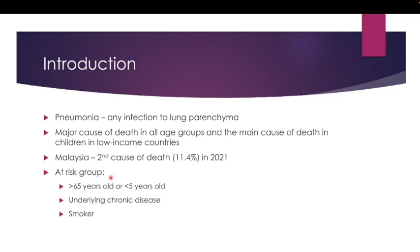The at-risk groups for pneumonia are usually those aged more than 65 years old and those aged less than 5 years old, those with underlying chronic diseases including pre-existing lung conditions such as chronic bronchitis and asthma, as well as any diseases that cause immunosuppression — for example, uncontrolled diabetes mellitus, those on immunosuppressants, and smokers including passive smokers.